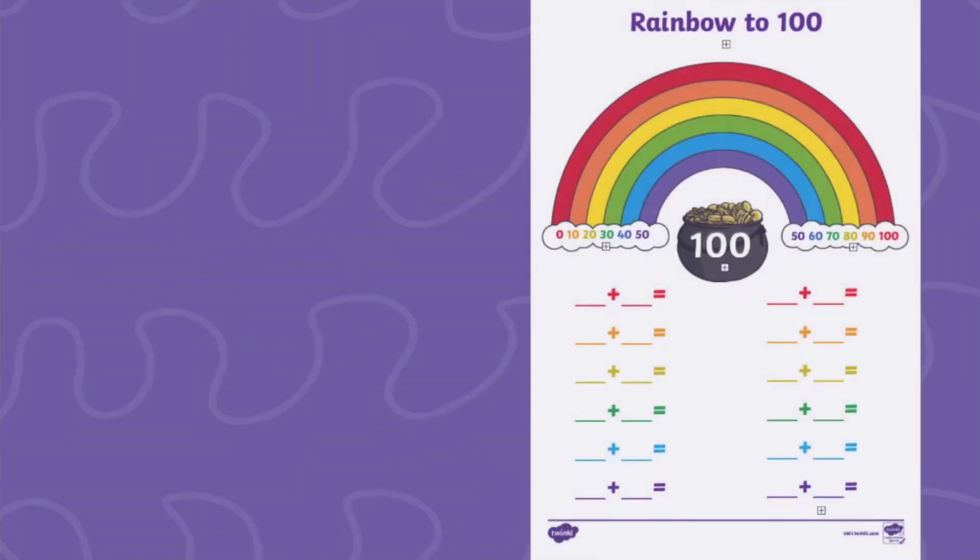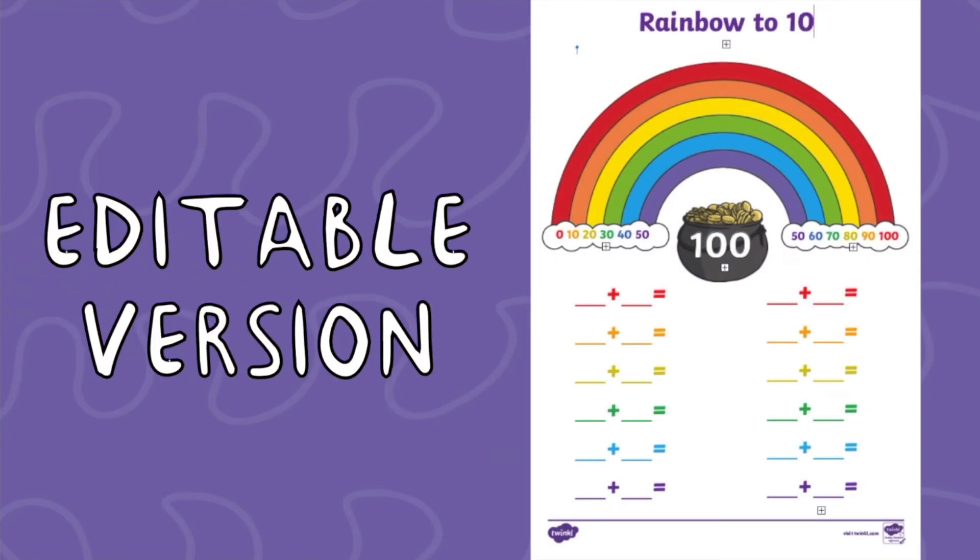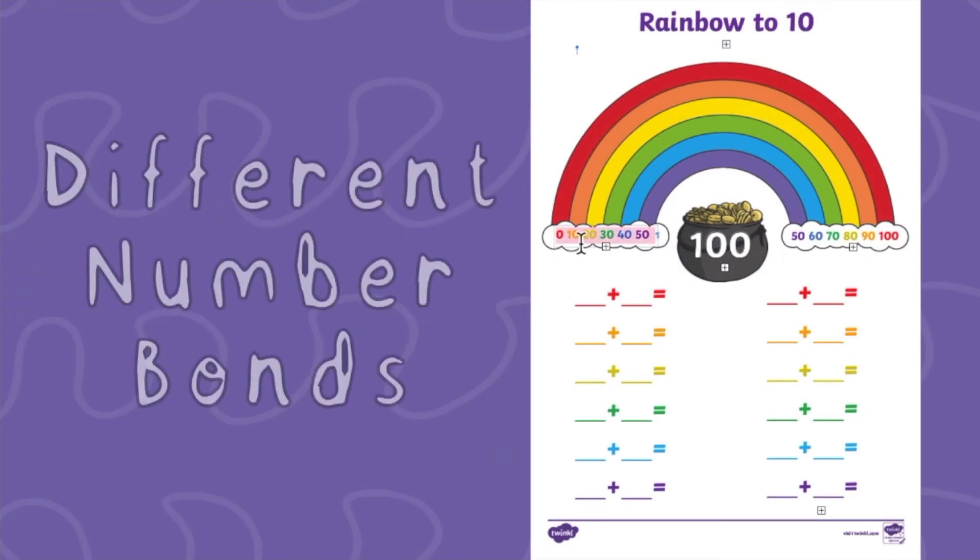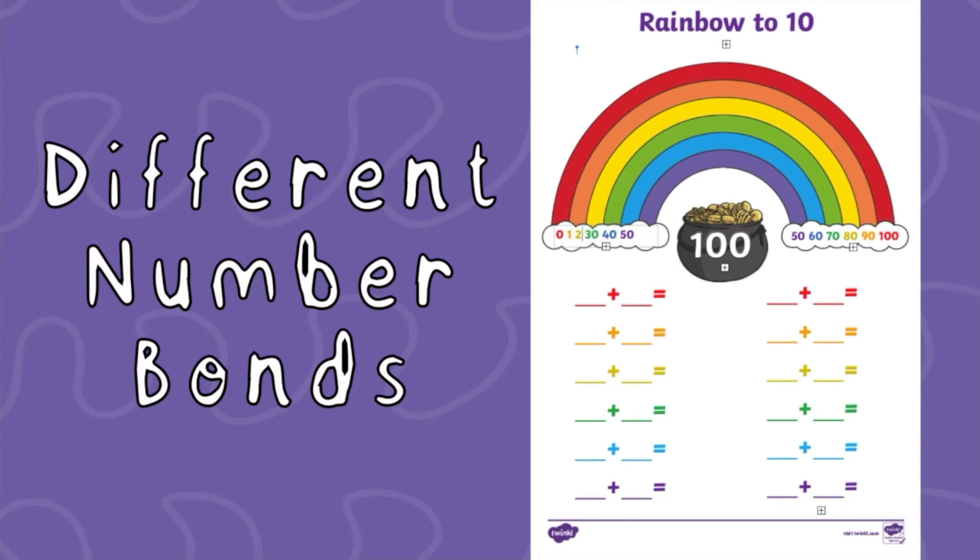Or open up our editable version and then you might want to change the numbers that your children are finding the number bonds to. For example, instead of finding the number bonds to 100, can they find the number bonds to 10?